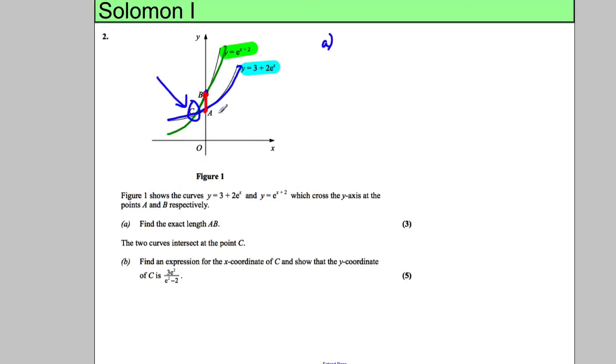So what you've got to do is substitute x equals 0 into the equation y = 3 + 2e^x and when you do that you get y equals 5. And you substitute x equals 0 into the equation y = e^(x+2) and you would get that y equals e^2.